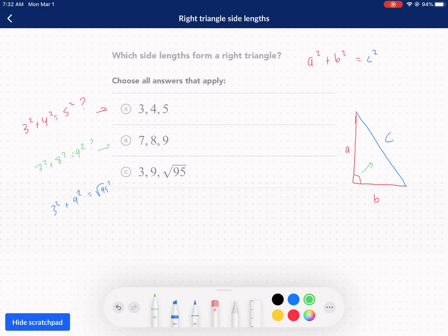For the first one, we know that nine plus 16 does in fact equal 25. So A is going to be a correct choice. Nine plus 16, it does in fact equal. So we got a checkmark there.